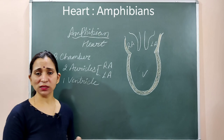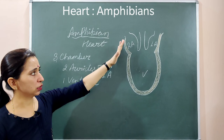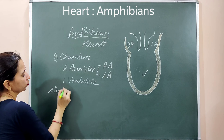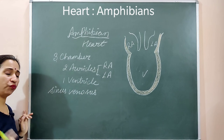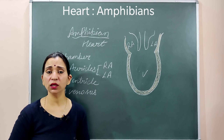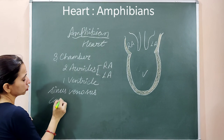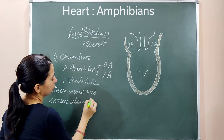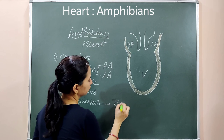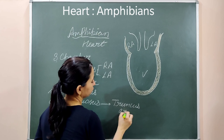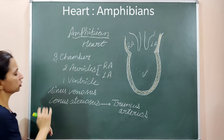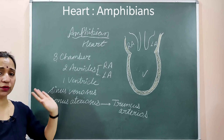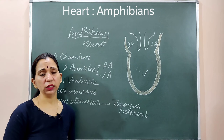When we talk about the accessory chambers, the sinus venosus is retained in amphibians just as it was in fish. The conus arteriosus, however, gets merged with the aorta and is converted into a different structure known as the truncus arteriosus. So the sinus venosus remains as it is, while the conus arteriosus becomes the truncus arteriosus.